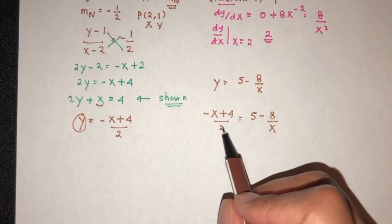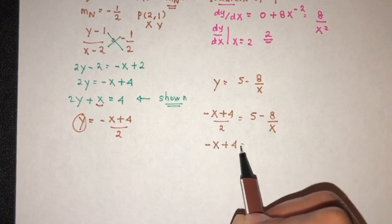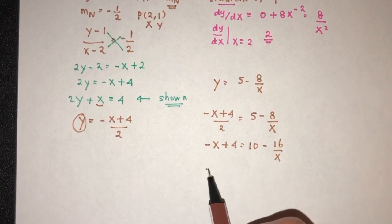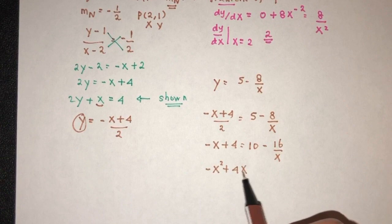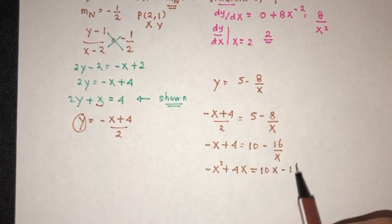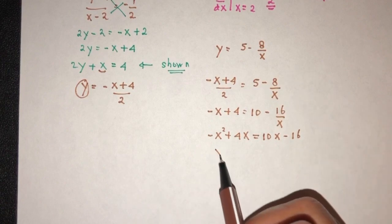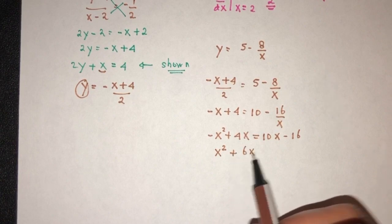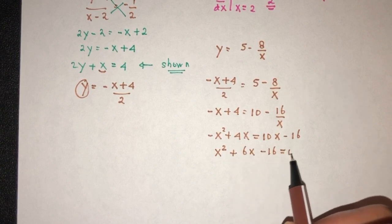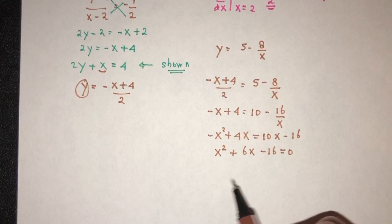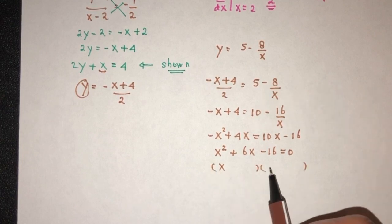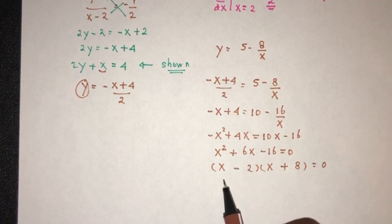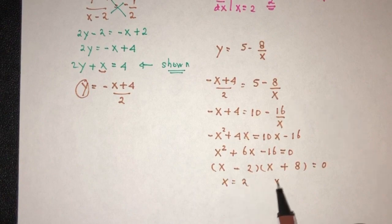We can try to simplify. First multiply by 2, you will get this. Then multiply by x to cancel the fraction. That should give minus x squared plus 4x equals 10x minus 60. Turning everything to one side you will have x squared, and 10 minus 4 gives plus 6x minus 18 equals 0. So we can factorize: that will be (x plus 8)(x minus 2), giving x equals 2 and x equals minus 8.